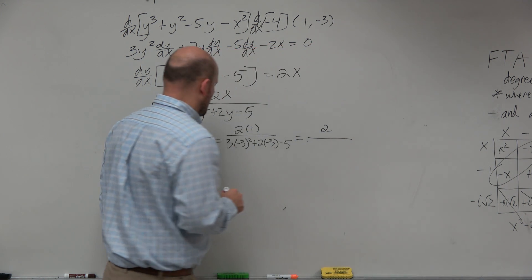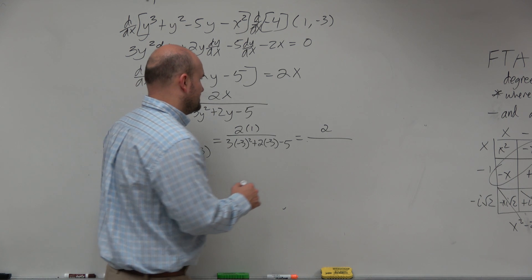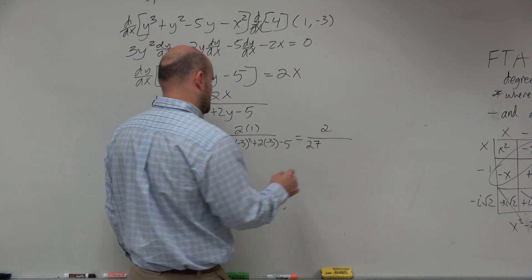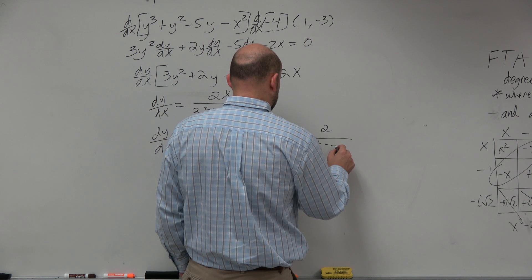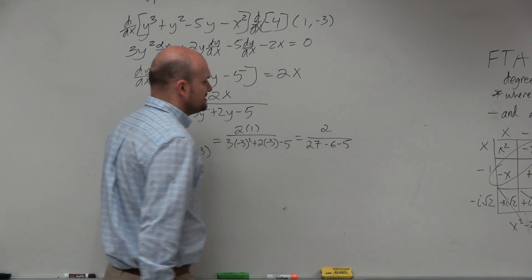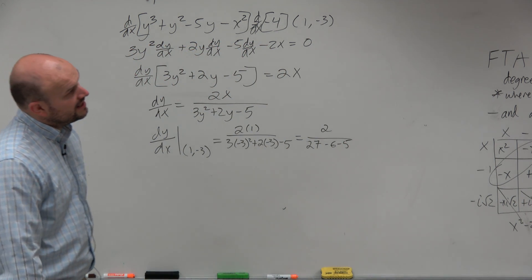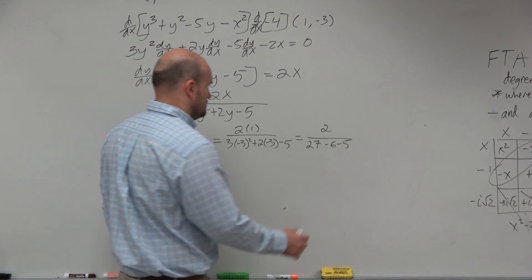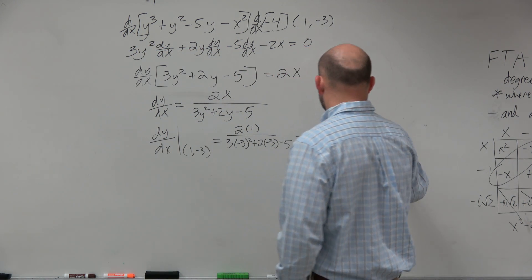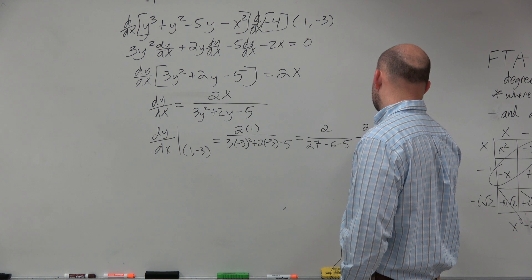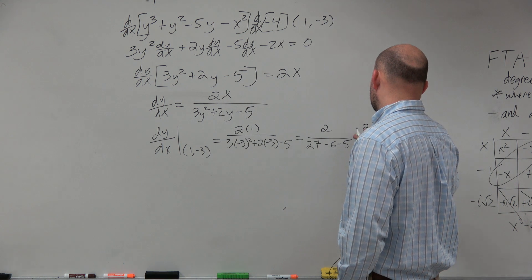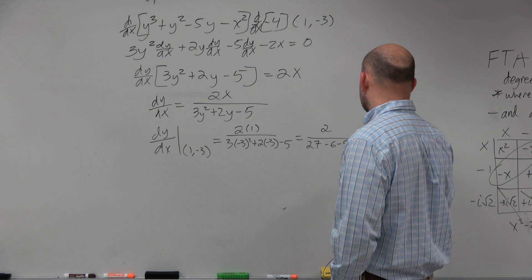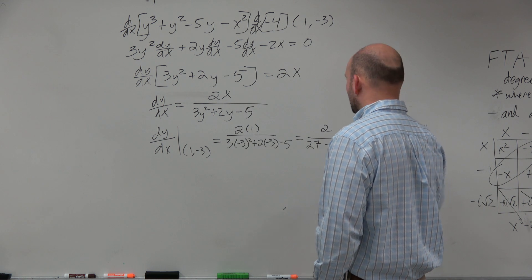That's 9 times 3 is 27, plus negative 6 minus 5 — so that's minus 11 on the bottom. So that would be 2 over 16, which equals 1/8.